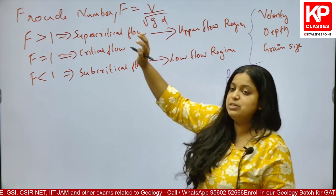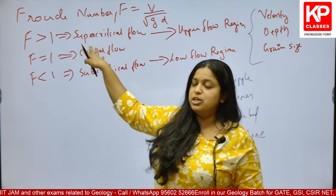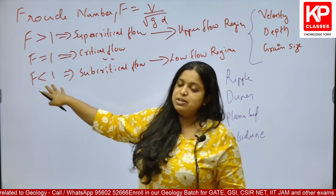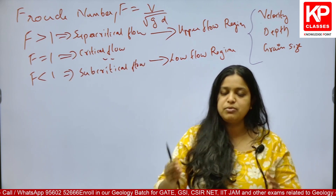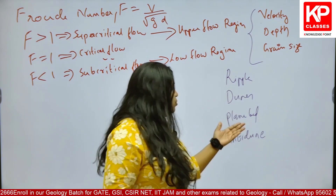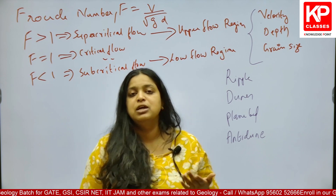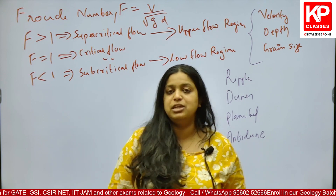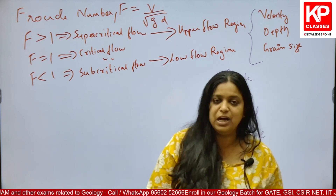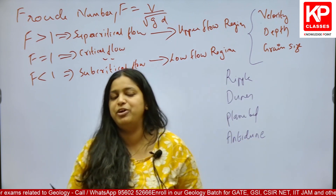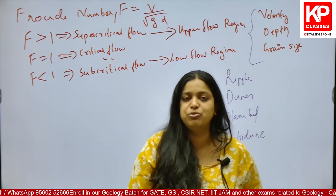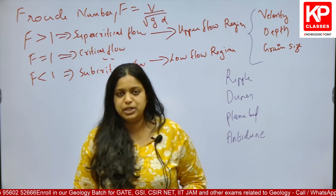If Froude number of a channel is greater than 1, we call it as supercritical flow. If it is equal to 1, we call it as critical flow. If it is less than 1, we call it as subcritical flow. All the sedimentary bed forms — ripples, dunes, plane bed, anti-dune — all these have a relationship with the Froude number. We can define which bed forms develop when the flow condition is supercritical, or what will be their characteristics.